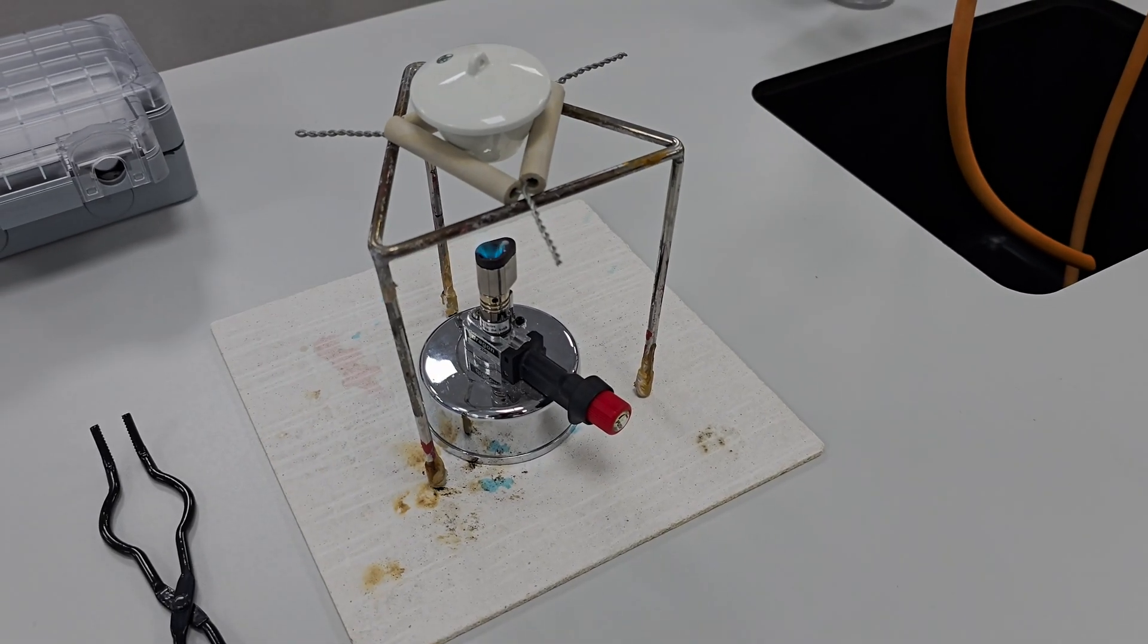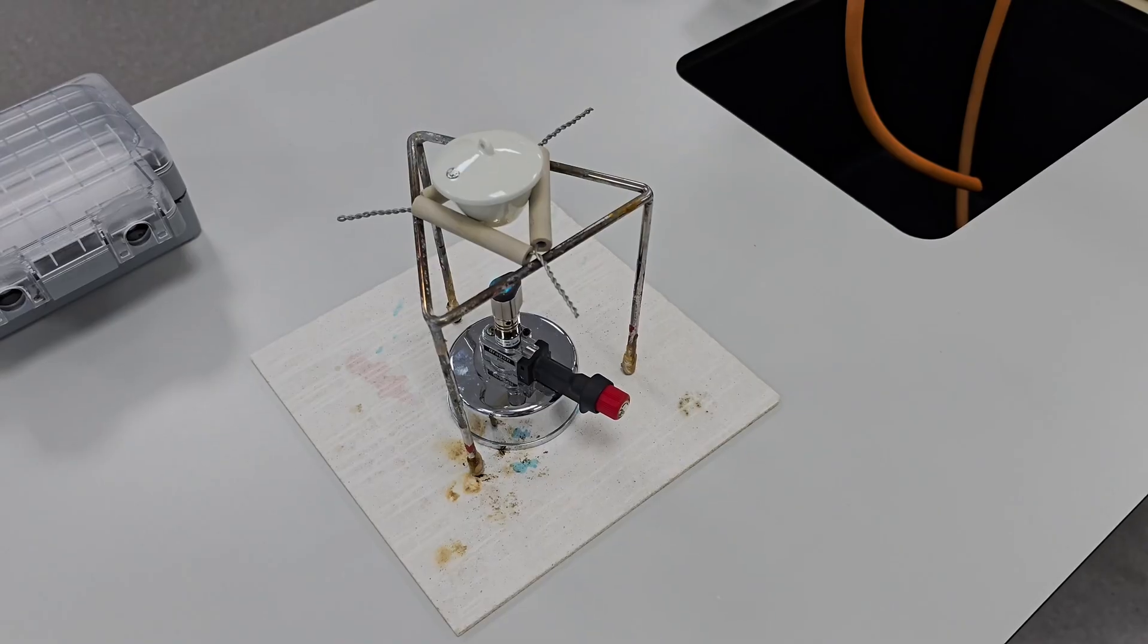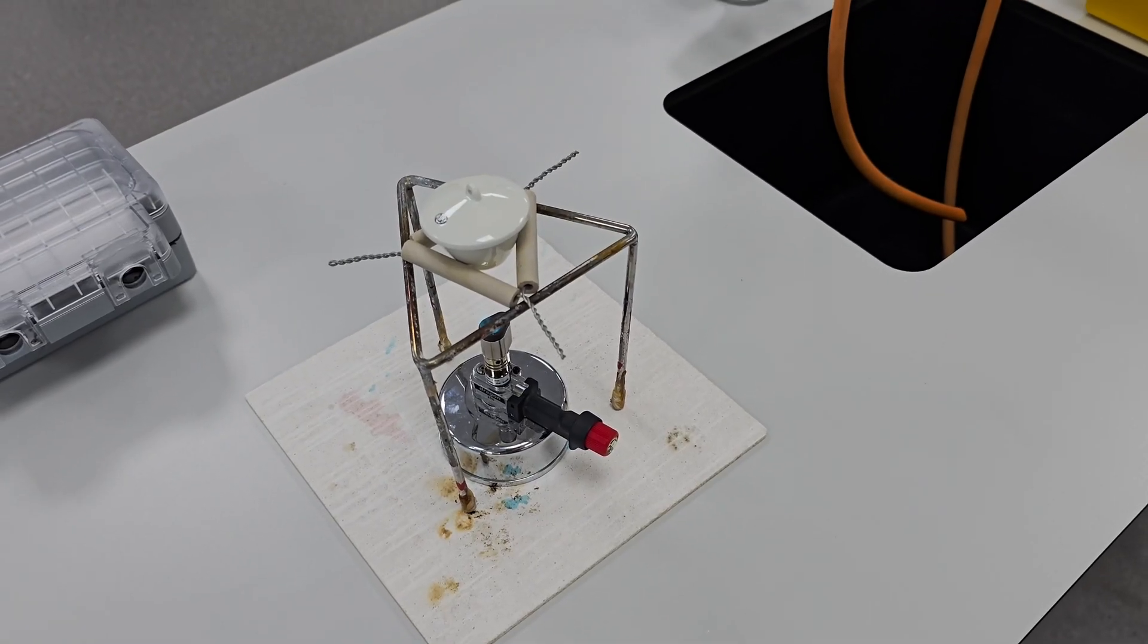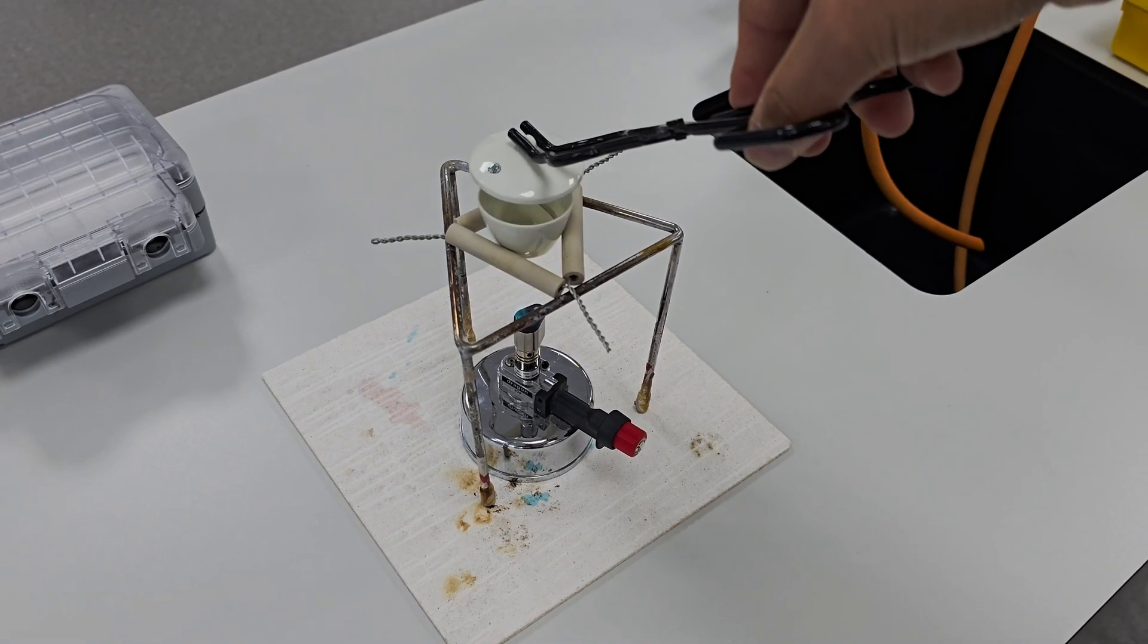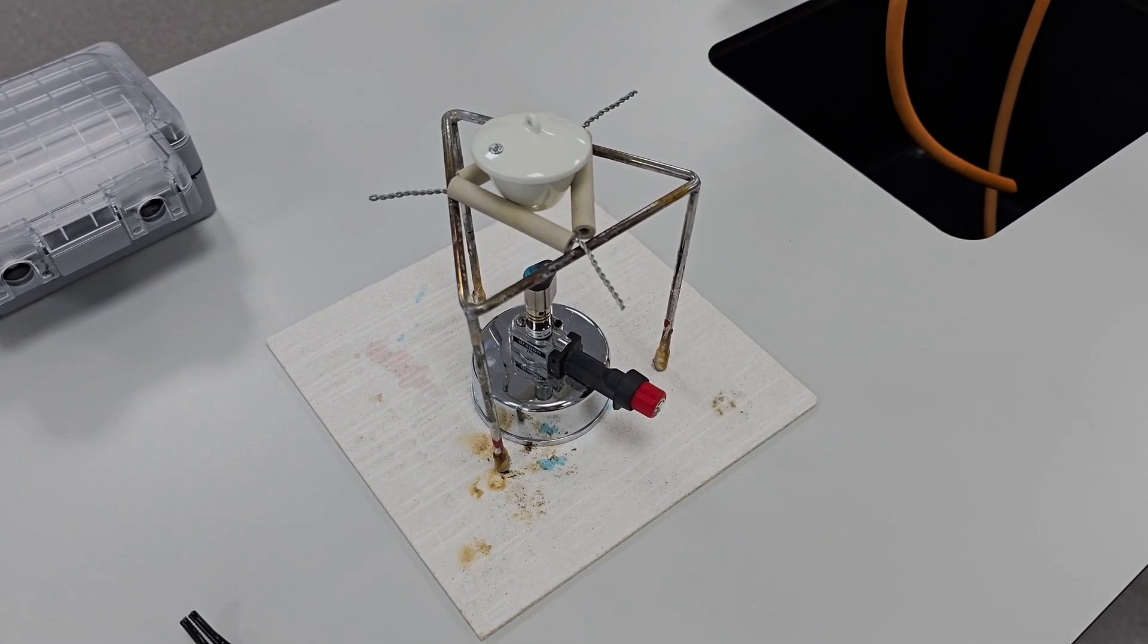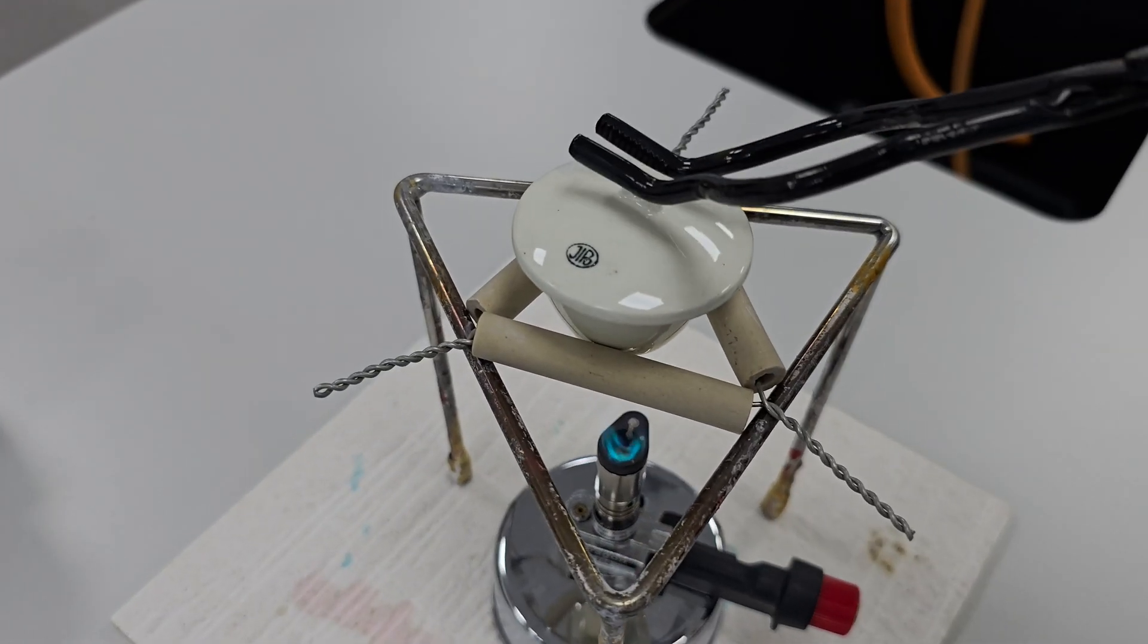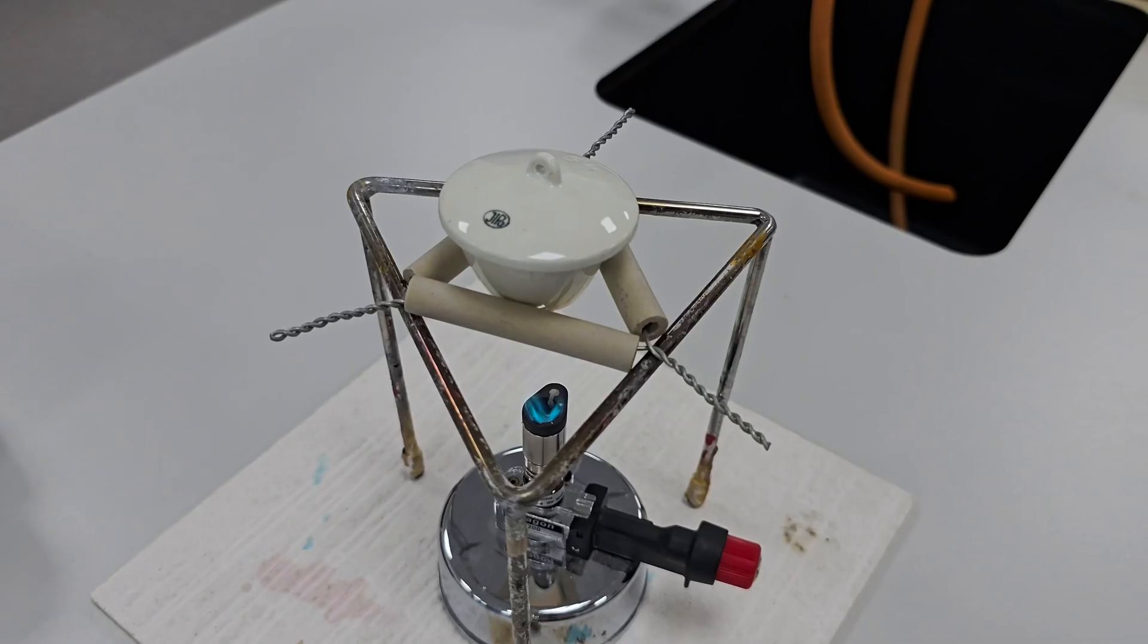Every 20 seconds I lift the lid slightly to let oxygen in. This is crucial because magnesium needs oxygen from the air to form magnesium oxide. If we didn't lift the lid there wouldn't be enough oxygen for the magnesium ribbon to completely react. You can actually see the magnesium glowing brightly every time we lift the lid. That's the magnesium reacting with oxygen in real time.